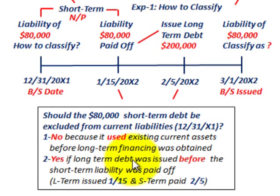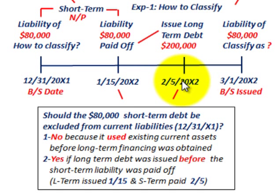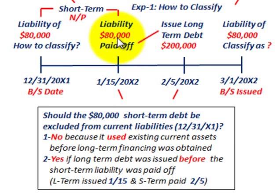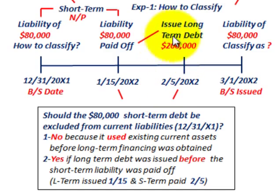Now the yes case: if the long-term debt was issued before the short-term liability was paid off — say the long-term debt was issued on 1-15-20X2 and the liability was paid off on 2-5-20X2 — then yes, we could exclude this notes payable as a current liability on our balance sheet, because it would have been paid off with long-term debt. So the key is timing: if you issue the long-term debt before the liability is paid off, with the intention of refinancing the current liability, you would reclassify it out of current liabilities.